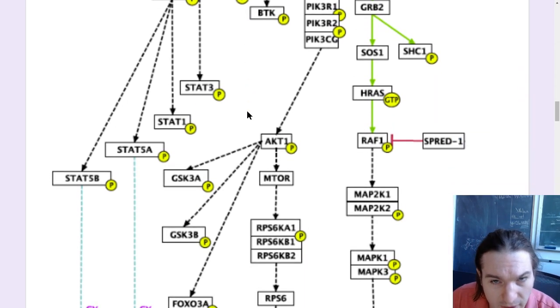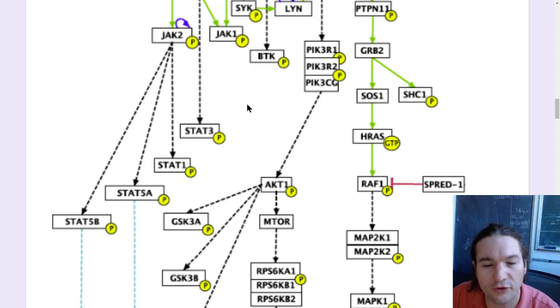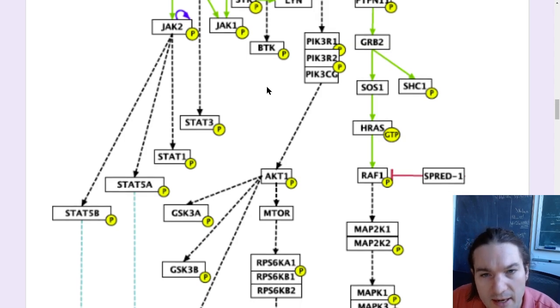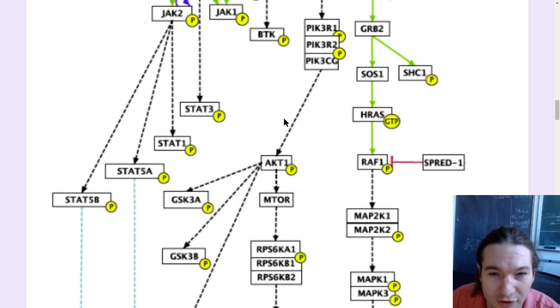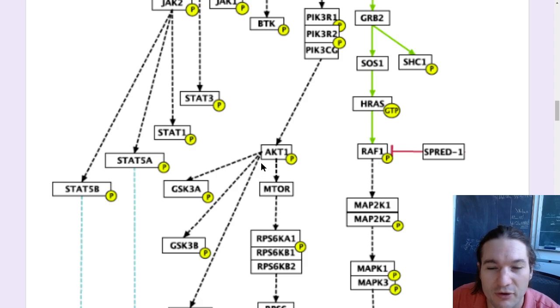And then as you work your way down, as you get kind of closer and closer to the final products, the likelihood that a mutation is going to cause gene expression changes is going to get smaller and smaller because there's just less kind of downstream processes. That's really what I was trying to get you to think from this.